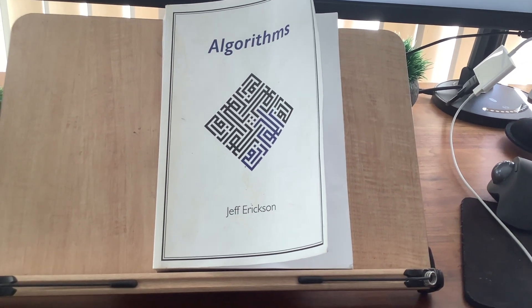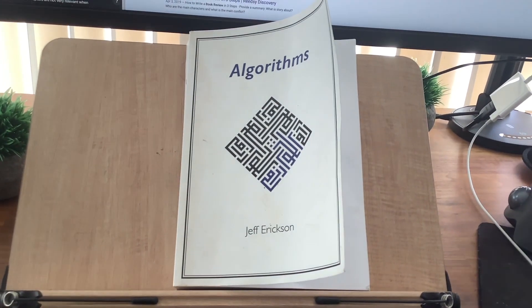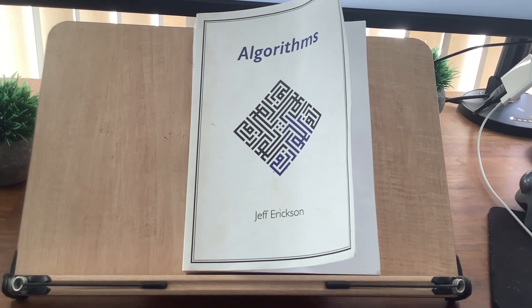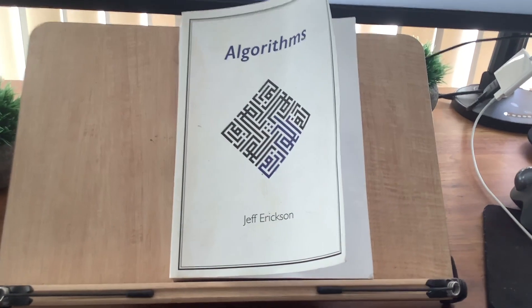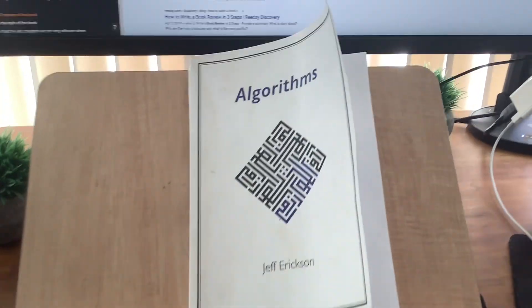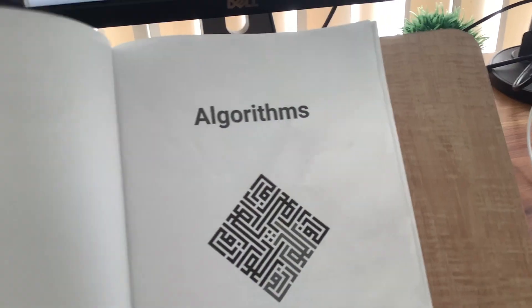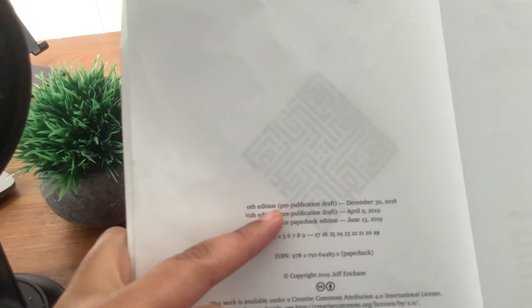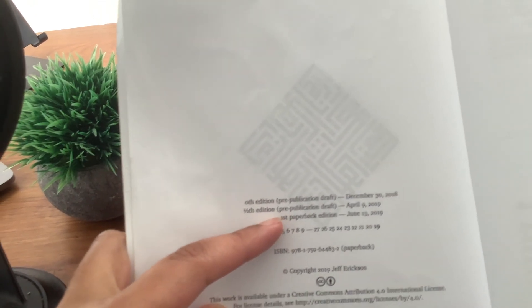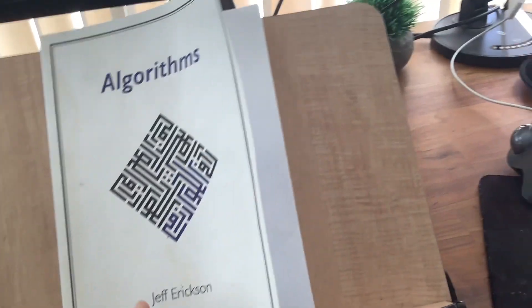Today we're going to do something a little different and do a book review. I'm going to start with this book I read recently called 'Algorithms' by Jeff Erickson. It's actually a pretty interesting and recent book — you can see the pre-publication draft is dated December 13, 2018, and the first paperback edition came out just last year in June 2019.